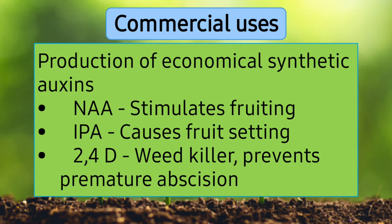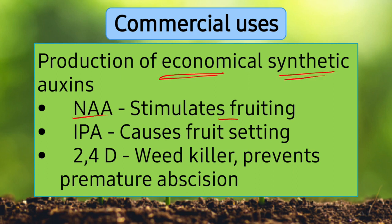Regarding commercial applications of auxins: we can also produce auxins in synthetic form — that is, artificially in industry. These synthetic auxins have greater economic importance because they are more favorable for plants and have higher activity. Among the synthetic auxin variants we have NAA (naphthalene acetic acid), which stimulates fruiting; IPA (indole propionic acid), which helps in fruit setting and fruit maturation; and 2,4-D (2,4-dichlorophenoxyacetic acid).